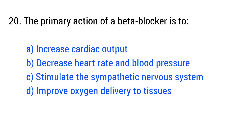Question No. 20. The primary action of a beta blocker is? The right answer is option B: Decrease heart rate and blood pressure.